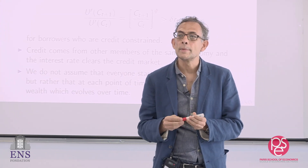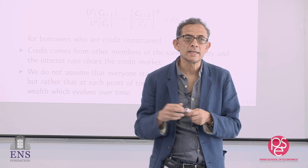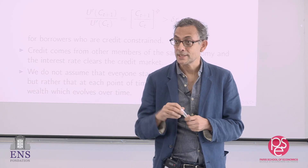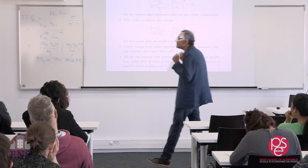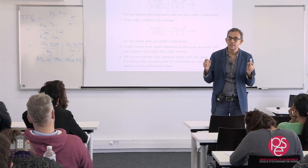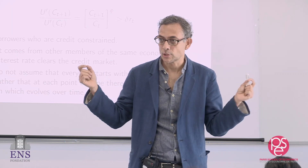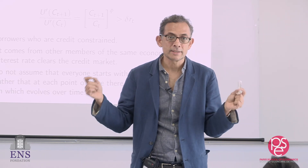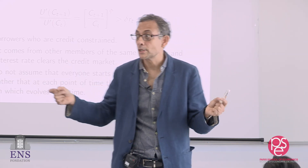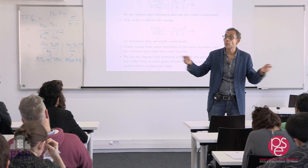With a linear production function, everybody's marginal product is the same. To say that I'm credit constrained is to say that my marginal product is higher than the interest rate. Otherwise, I'm not credit constrained. But if my marginal product is higher than the interest rate, and everybody has the same marginal product, then everybody must be credit constrained. So for the capital market to clear, the interest rate must go up. And nobody will be credit constrained. With a linear production function, nobody will be credit constrained.